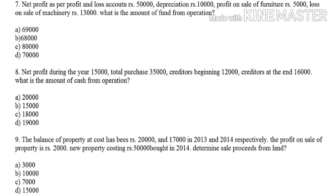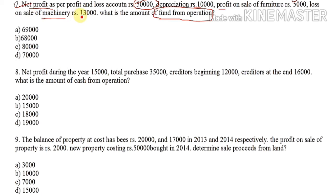Next question is a problem: calculate fund from operations. Given data: net profit is $50,000, depreciation is $10,000, profit on sale of furniture is some amount, and loss on sale of machinery is $13,000. To calculate fund from operations, we start with net profit, then add non-fund expenses and non-operating expenses.